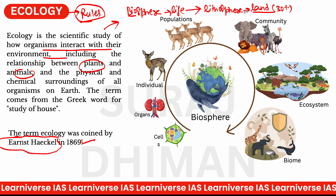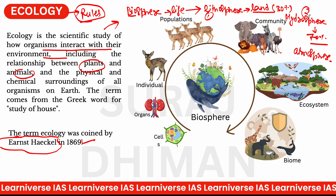दूसरा component है hydrosphere — यह basically 70% water है। और तीसरा है atmosphere — gases का एक पूरा envelope है हमारी earth के surrounding में जिसको atmosphere कहते हैं। जहाँ पर lithosphere, hydrosphere, और atmosphere तीनों मिल जाते हैं, उसको हम biosphere कहते हैं।